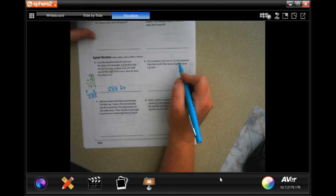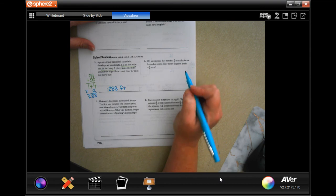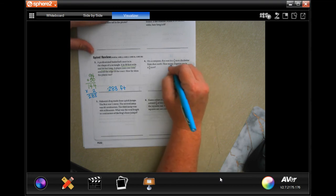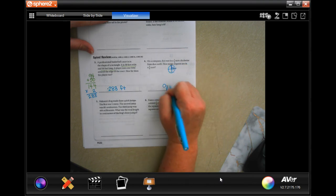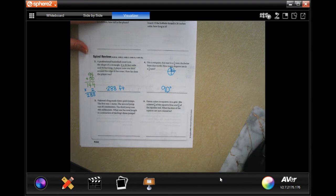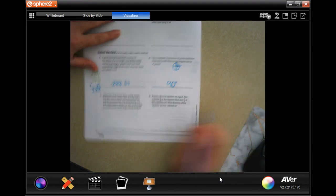On a compass, due east is a quarter turn clockwise from due north. How many degrees are in a quarter of a turn? How many degrees is this? Well, it makes an L, so it is 90 degrees.